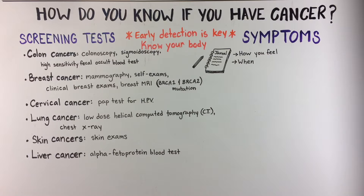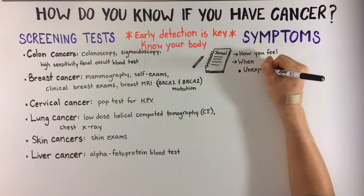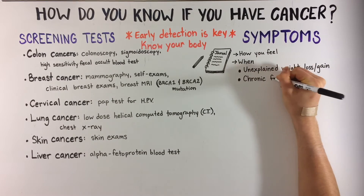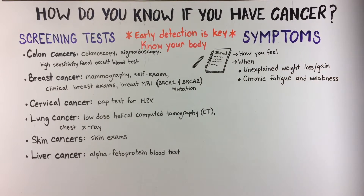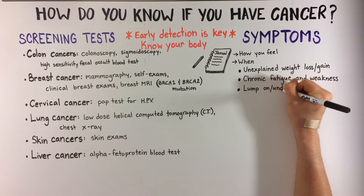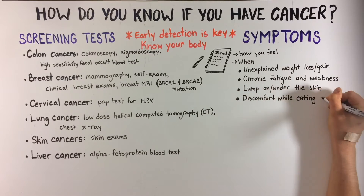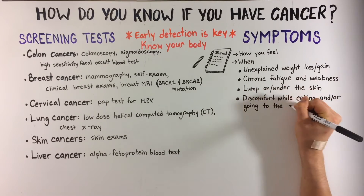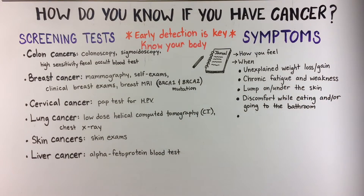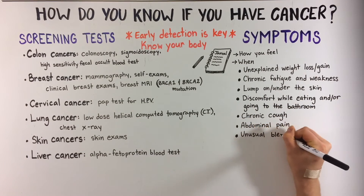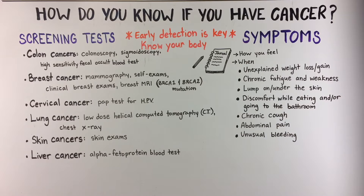Some key signs to look for include unexplained weight loss or gain, feeling unusually weak and tired for an extended period of time, a thickening lump on or underneath the skin, discomfort due to eating and/or going to the bathroom, a hoarse cough that does not go away, abdominal pain, and unusual bleeding when going to the bathroom.